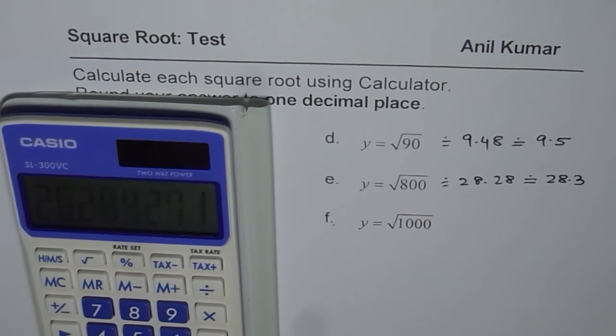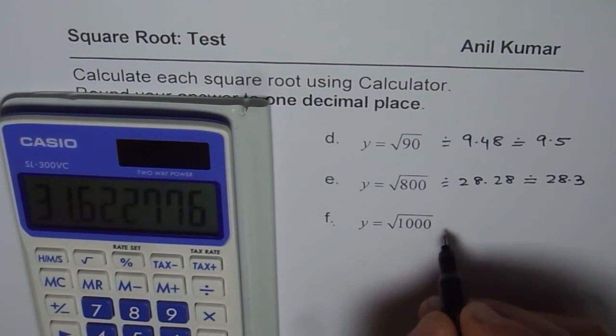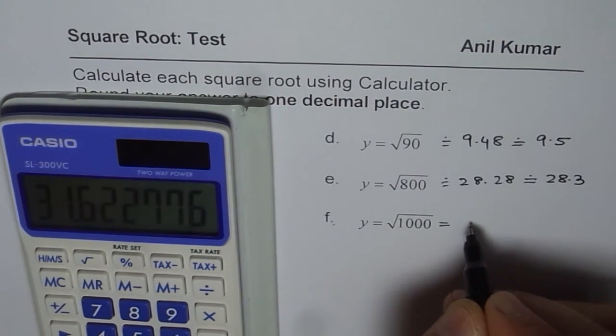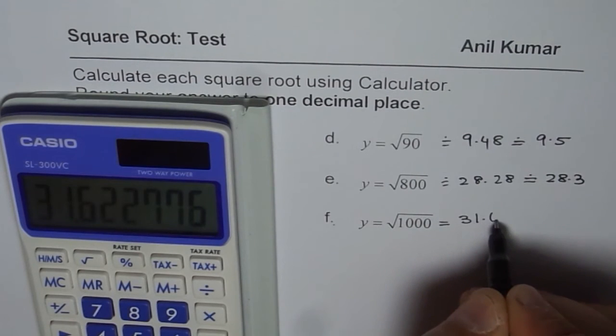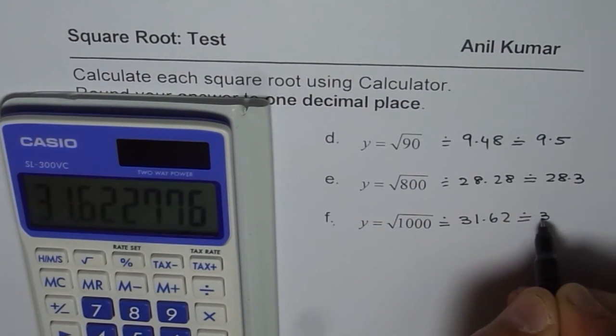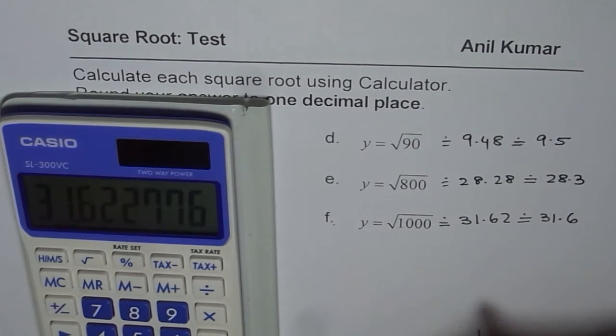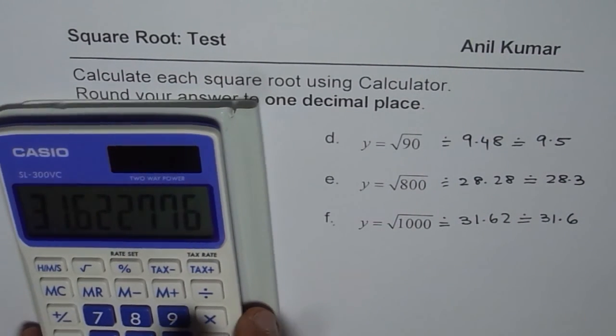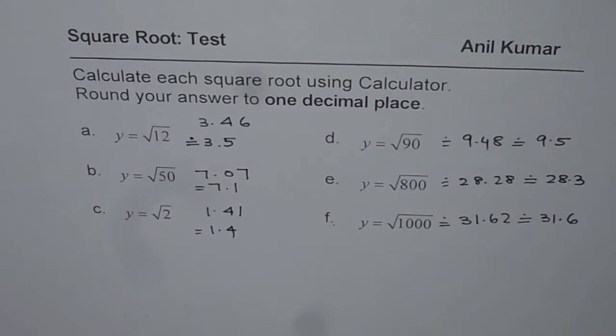And what do you expect as square root of 1000? That is interesting, right? It is not 100, right? It is 31.62 something, which rounds to 31.6. So the square root of 1000 is 31.6, correct? I hope you got them all right.